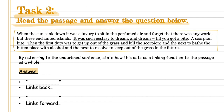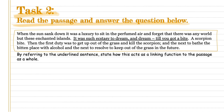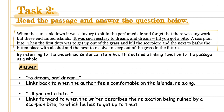Task two's answer: the first part of the sentence is before the dash. I quote 'to dream and dream' and say it links back to when the author feels comfortable on the island relaxing — that's what the first part of the passage is about. After the dash there's a change: he gets bitten and the happiness is gone. So I quote 'till you got a bite' — this links forward when the writer describes the relaxation being ruined by a scorpion bite, to which he has to get up. Two quotes and two attempts to link back and forward means two out of two marks. Well done if you got full marks.